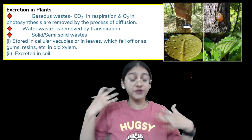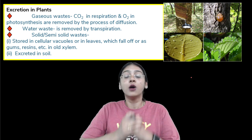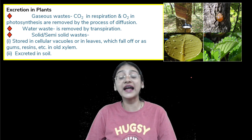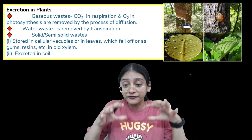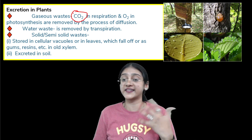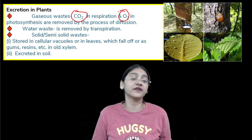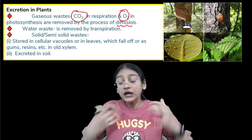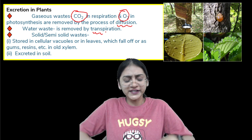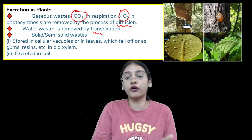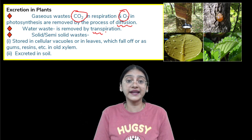Now moving to excretion in plants. Not only animals, but plants also excrete in solid, liquid, and gaseous forms. In gaseous form, carbon dioxide is excreted during respiration and oxygen is excreted as waste during photosynthesis — both are removed by simple diffusion. In liquid form, water is removed as waste through transpiration.